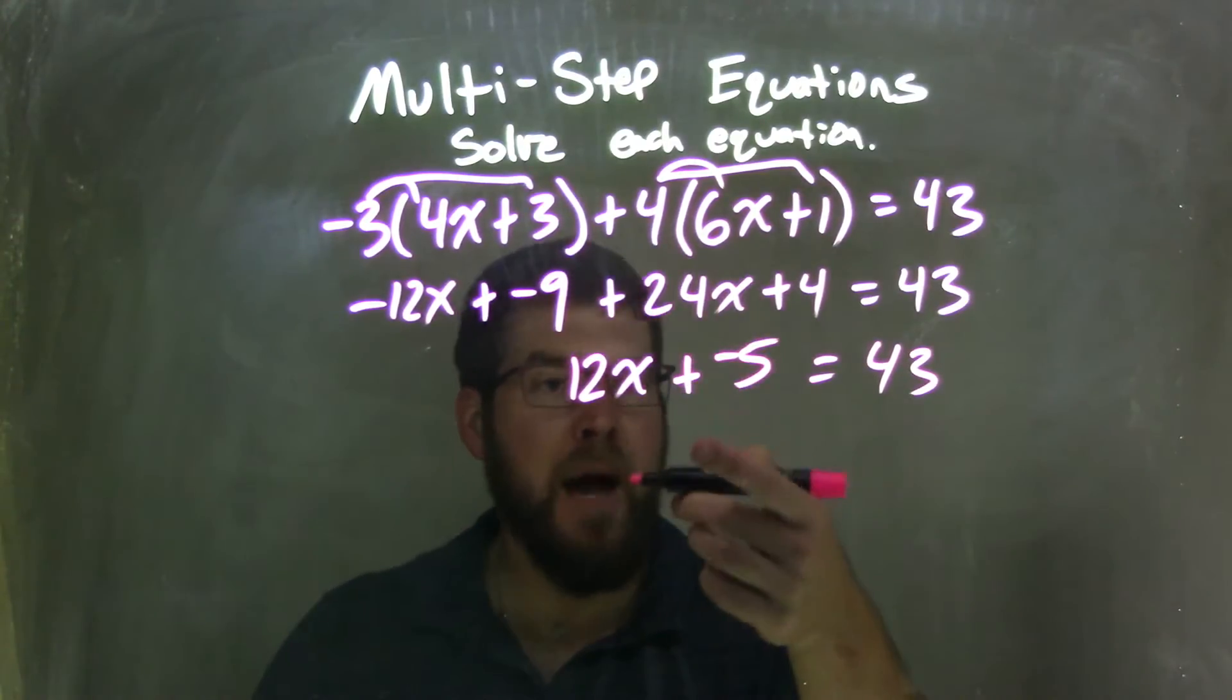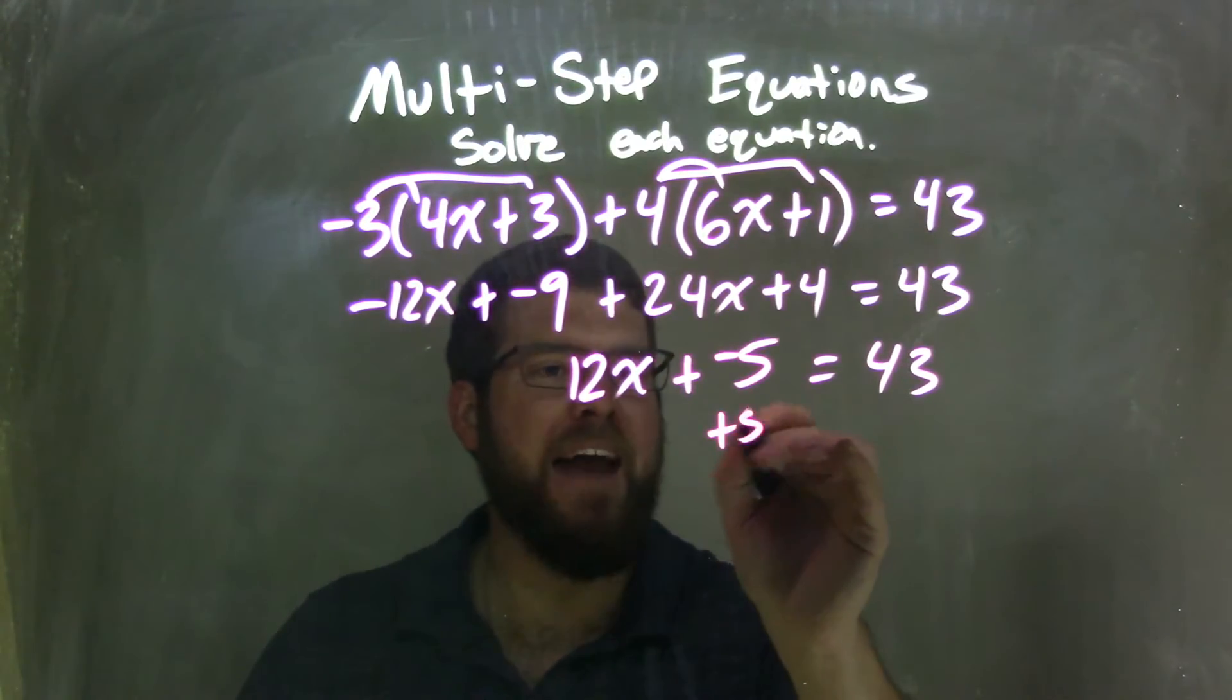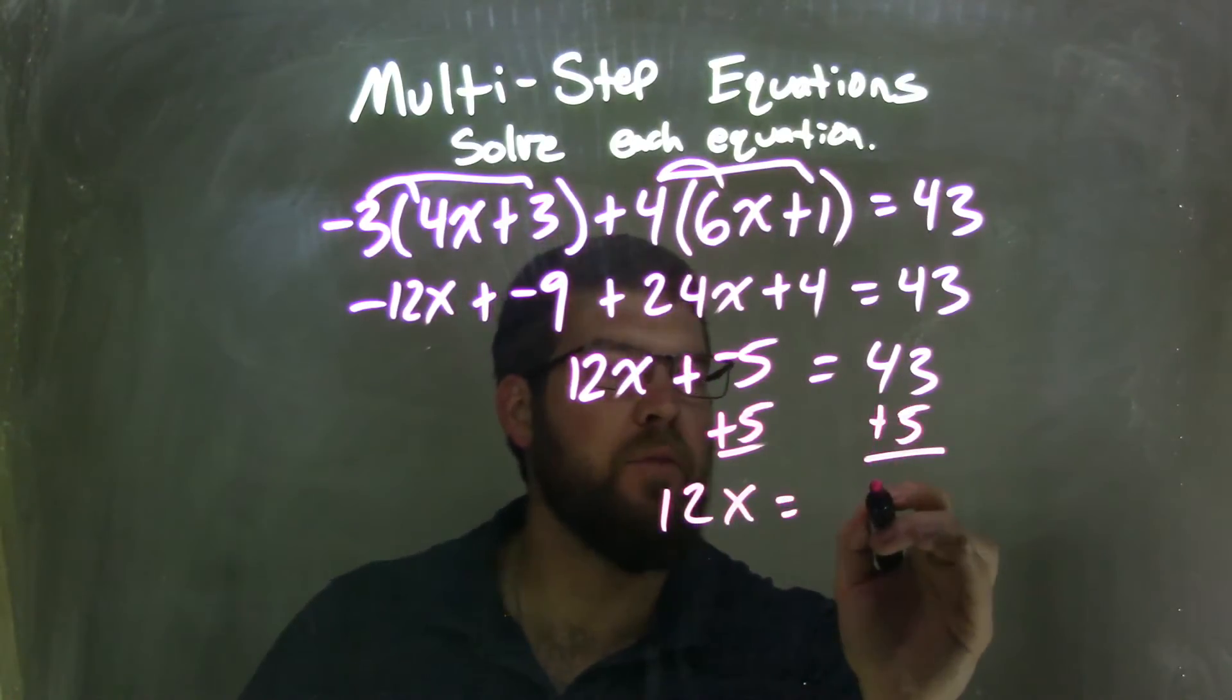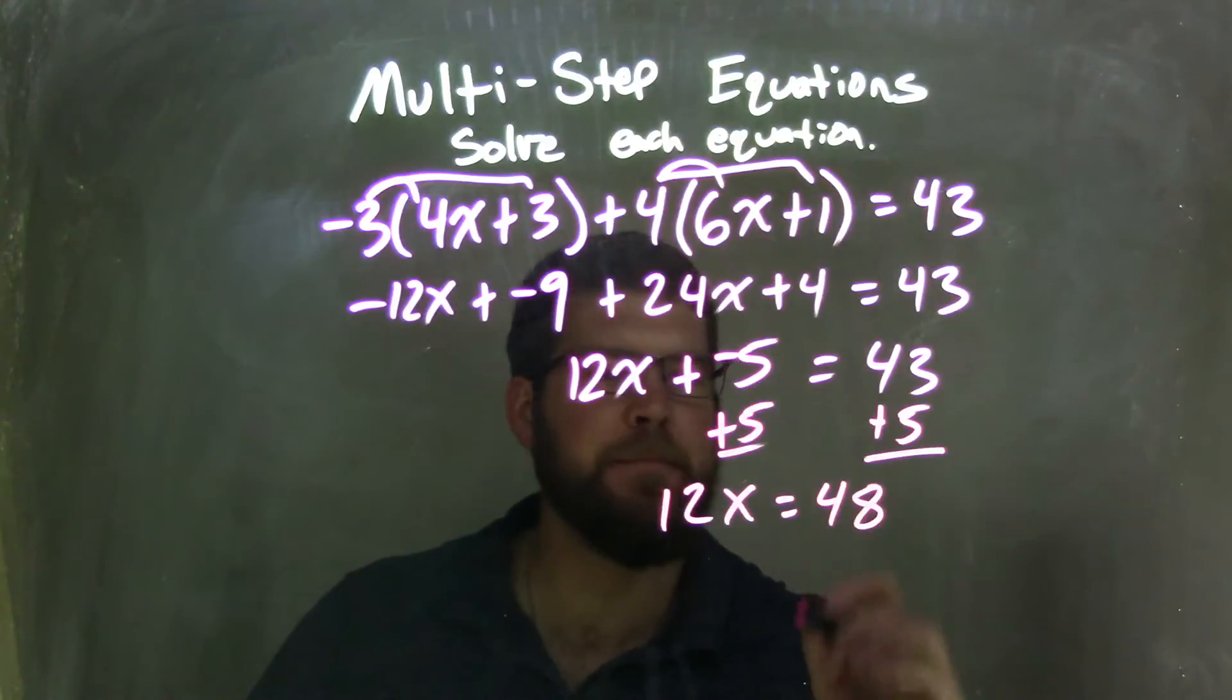Now I need to do the opposite of this subtraction. So I'm going to add 5 to both sides, leaving me with 12x equals 43 plus 5, which is 48.